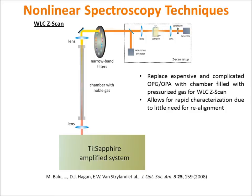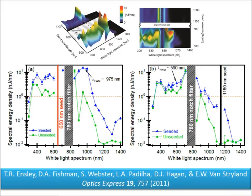Most recently, we have introduced weak seed pulses to enhance and extend our white-light spectrum. In this video, we show a 650 nm seed pulse, the unseeded white-light spectrum, and the seeded white-light spectrum.